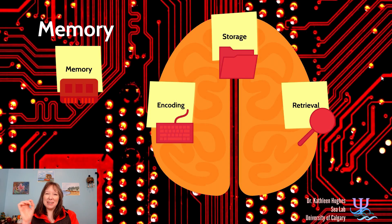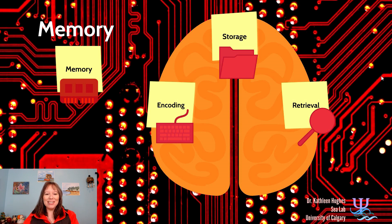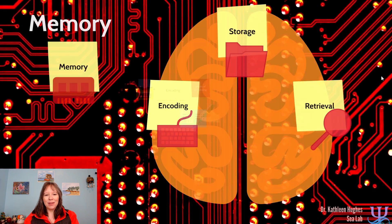Now that we've learned just the tip of the iceberg when it comes to memory, we're going to launch into these three discrete stages of encoding, storage, and retrieval. We're going to start off with encoding.